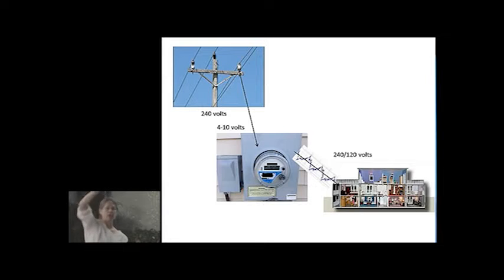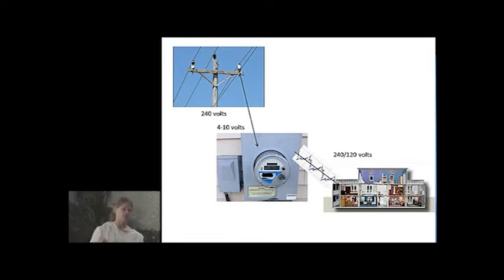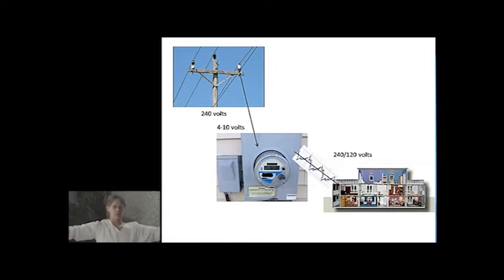The dirty electricity — your smart meter is what is creating that. Every line in your home, every line in this building, if it has a smart meter on it, is contaminated with that dirty electricity. You've got it in all the walls, above you, and if you have a basement, below you. It is radiating out into the room all the time.